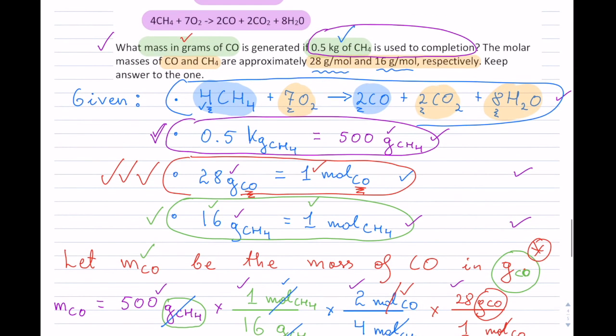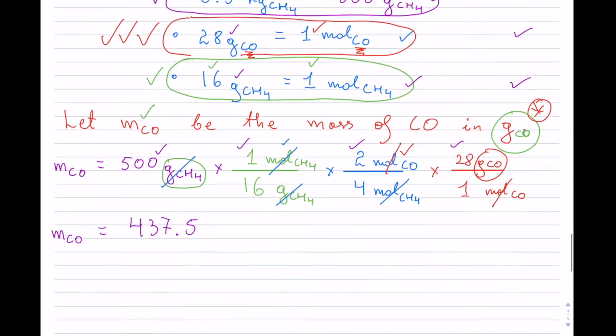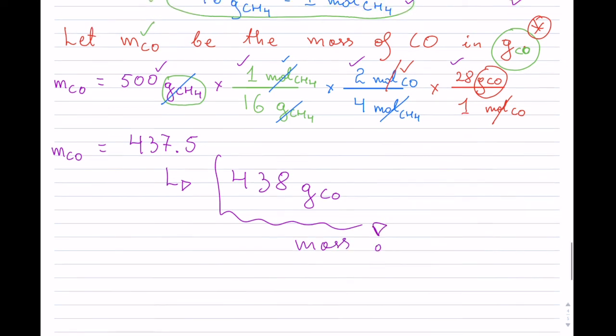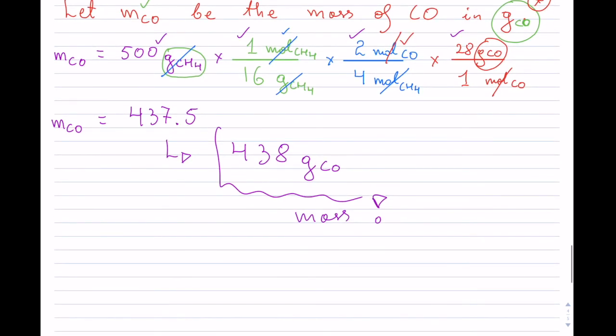Now I have to kind of check. They wanted the answer to the 1. So let me round this off. So 438. And it is now grams of CO. And that is your mass. That completes this question. Hope you found this useful. Thank you for watching.